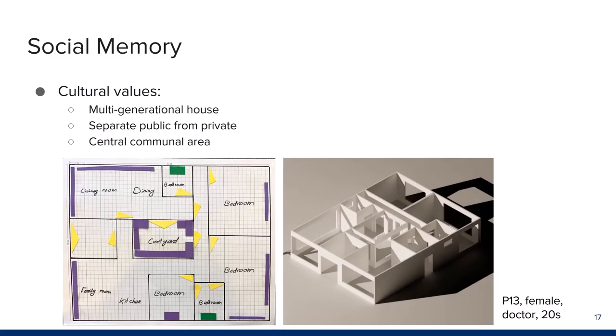We used Halbach's collective memory framework to analyze the designs. First, we established the social memory dimension. In all participants' designs, we saw the presence of cultural values not common in North America: namely multi-generational houses, a clear physical divide between public spaces such as a guest room and private spaces such as the kitchen, and a central communal area. For example, one design by a female doctor features a main entrance to the left that divides the house into a public sector at the top — a formal living-dining area with limited access — and a private sector at the bottom and right with open flow for the family.